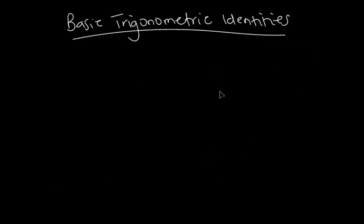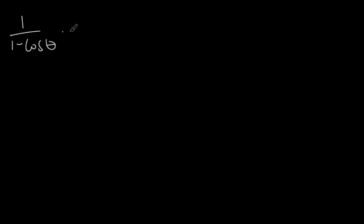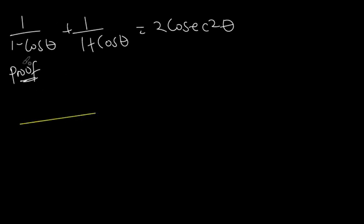With this basic introduction to the trigonometric identities, let's go ahead and solve an example to appreciate what we've covered. The first one: we have to prove that one over one minus cos theta plus one over one plus cos theta is equal to two cosec squared theta. Let's write the proof. To start, just as we would with any fraction, we find the LCM for this expression.